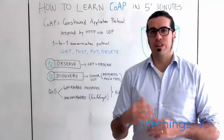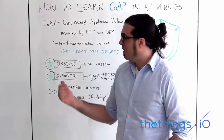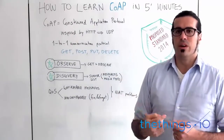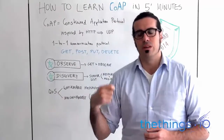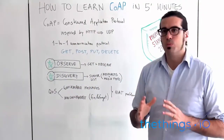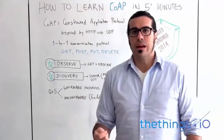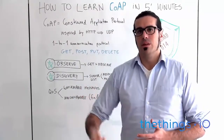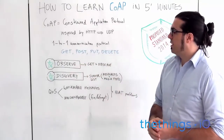CoAP also implements some interesting features on top of HTTP that are not implemented in HTTP itself — for example, observe and discovery features. In HTTP, it's complicated to know if there is a new state on a variable, so you usually need to do polling all the time, asking every minute or every second if there is a new state of a variable you are observing. In CoAP, they solve this with the observe flag: if you send a GET with an observe flag, every time the other device detects a change in that variable's state, it will push a notification back to the original device that defined the observe flag.